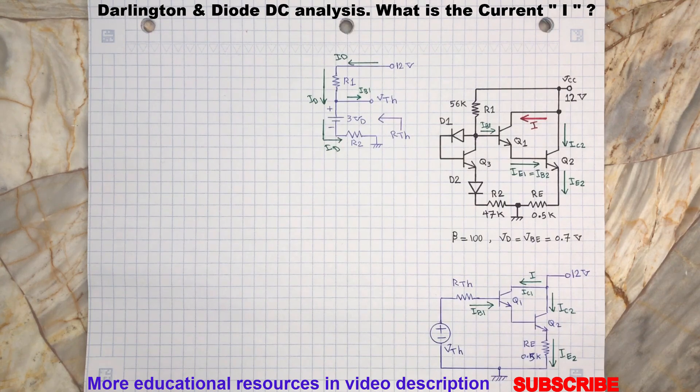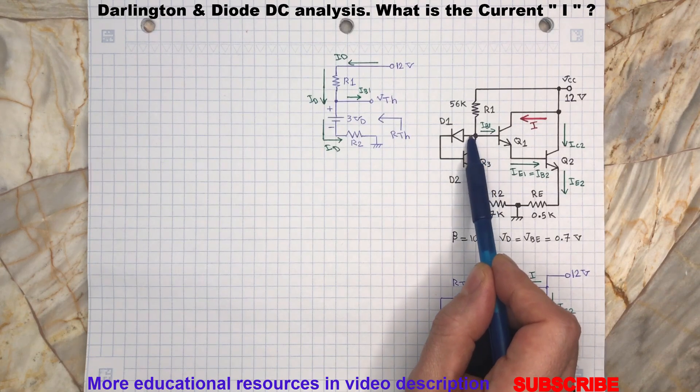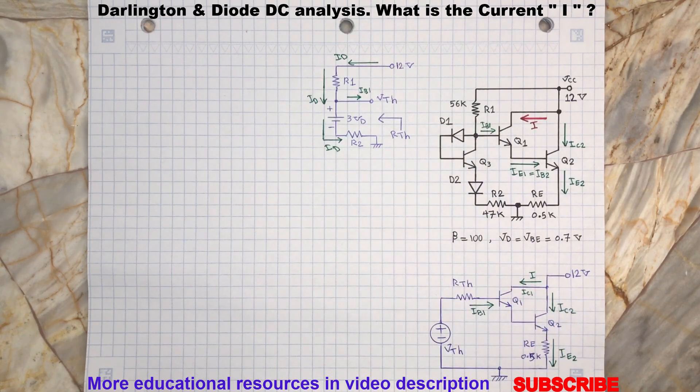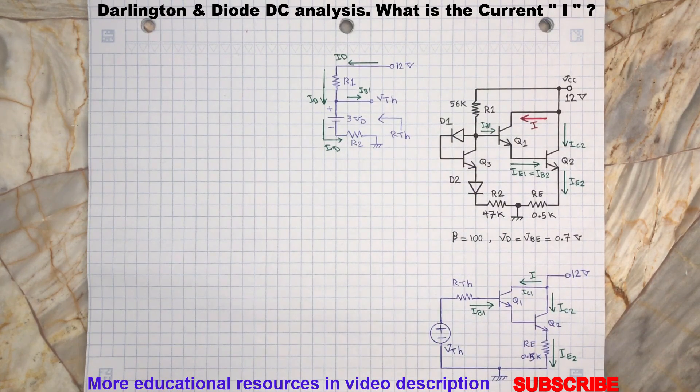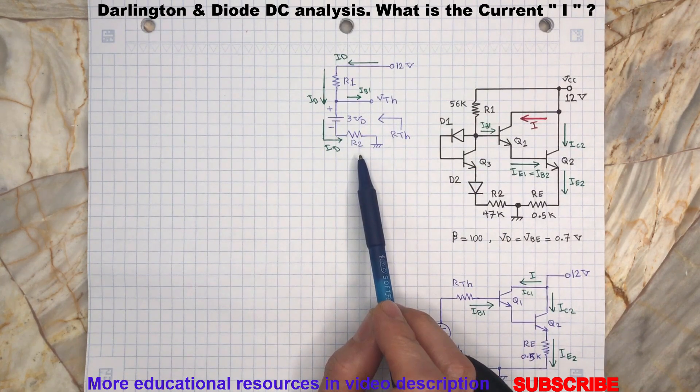And this will provide a forward bias to the base-emitter junction of Q3. So essentially we will have three diodes which are connected in series with R2.